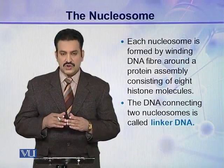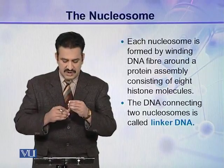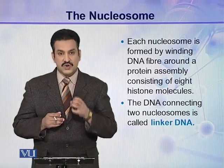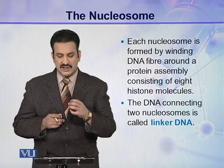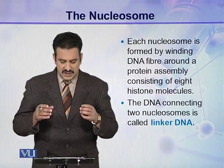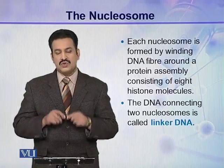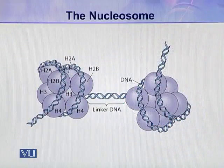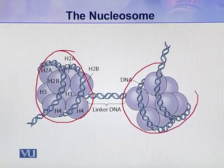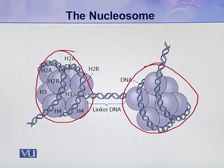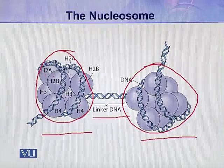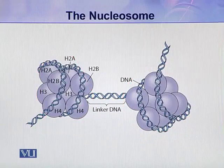Each nucleosome is formed by winding a DNA fiber around a protein assembly consisting of eight histone molecules. The two nucleosomes in the string are connected through DNA called linker DNA. Here you can see two nucleosomes — each consists of eight histone molecules — connected through this linker DNA. This is the structure of uncondensed chromatin.